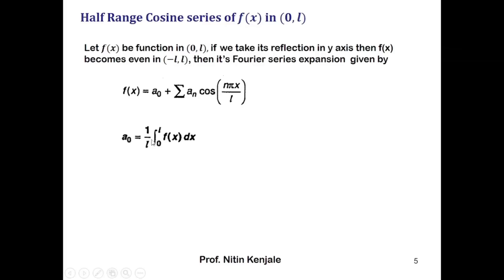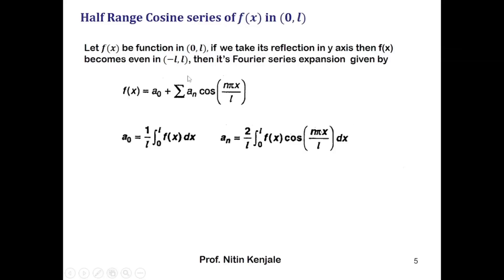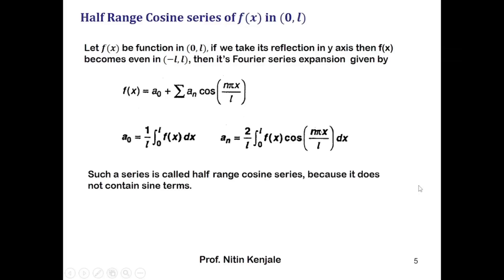Here a naught equals 1/l times the integral of f(x) dx over 0 to l, and a_n equals 2/l times the integral of f(x) cos(nπx/l) dx over 0 to l. Since there is no sine term in this series, this expansion of f(x) is called the half range cosine series.